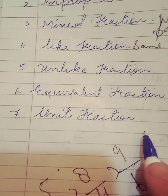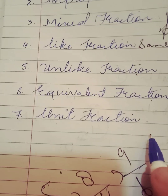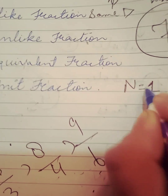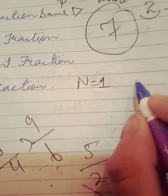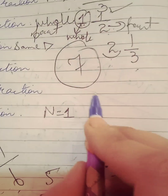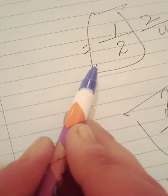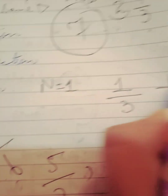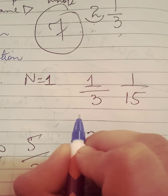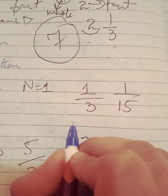The seventh type is unit fraction. A unit fraction is a fraction whose numerator is 1. For example, 1/3 and 1/2 are unit fractions — the numerator is equal to 1. I hope you understand. Thank you for watching.